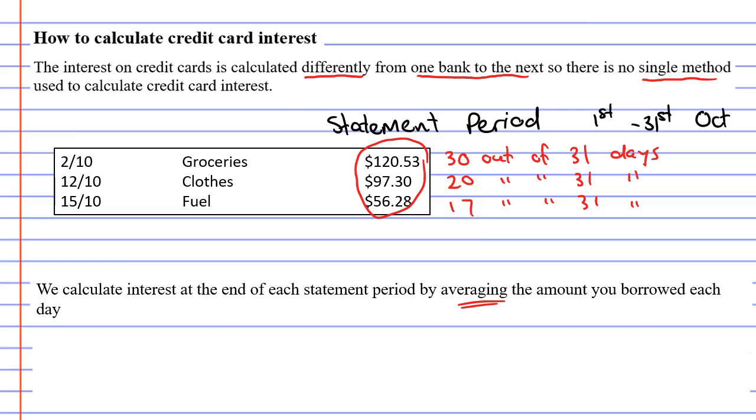I also want to point out that I've seen people solve credit card problems using simple interest and I've also seen people solve credit card problems using compound interest. So how do you know what you need to do in order to solve credit card problems?